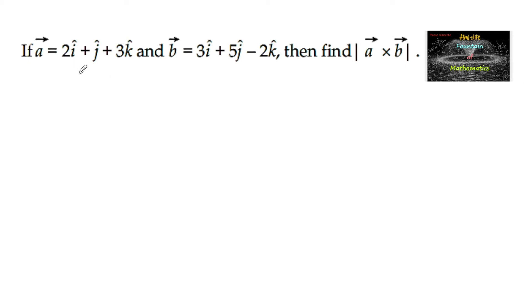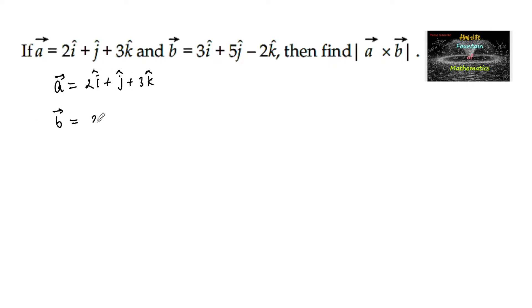If vector a is equal to 2i plus j plus 3k and vector b is equal to 3i plus 5j minus 2k, then find the mod of a cross b.